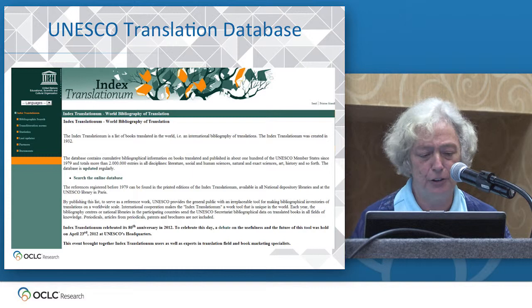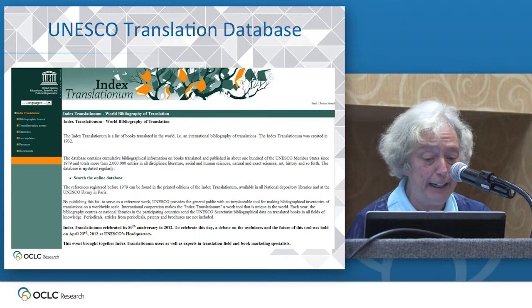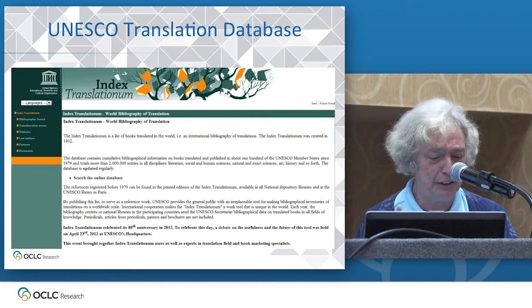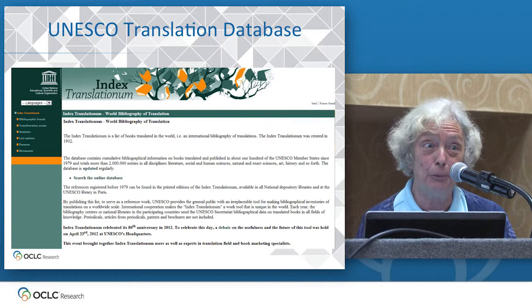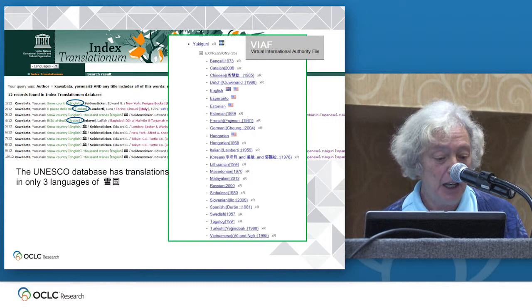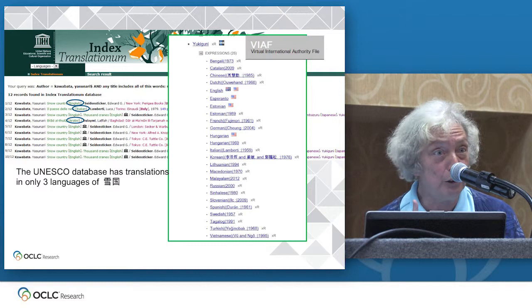UNESCO has also been interested in identifying and aggregating translations worldwide for an international bibliography of translations, and they've been at it for over 80 years. This database represents entries contributed from UNESCO members since 1979 — that's 25 years' worth — and contains 2 million titles. Yet when we compare the results for a specific work, Kawabata's Snow Country, or Yugaguni, we can see that the contributions OCLC member libraries have made through WorldCat are far greater than all the work invested so far by the UNESCO member states.